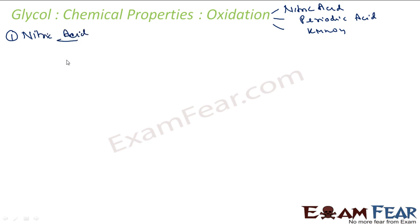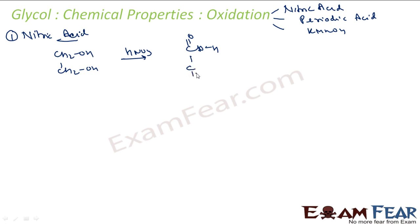First, if we oxidize glycol with nitric acid, what we get is oxalic acid. Please remember this: oxidizing glycol with nitric acid gives oxalic acid.